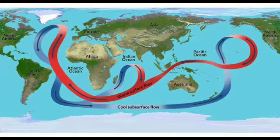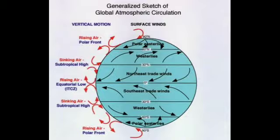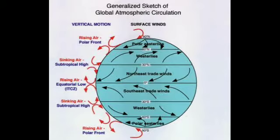Planetary winds are important factors which influence ocean currents. The planetary winds blow continuously in a particular direction and drag the surface water due to the force of friction. This leads to the formation of ocean currents. Most of the ocean currents of the world follow the direction of prevailing or planetary winds.